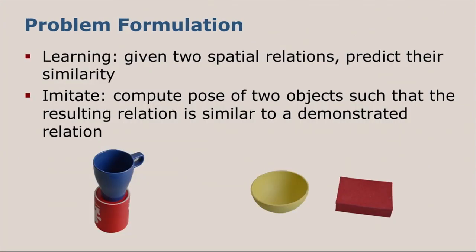We're going to tackle the problem of learning to predict the similarity of relations. For example, when we have these two scenes given here, we want to predict how similar are the relations contained in them. The second thing that we want to be able to do is to imitate relations. If we use the scene on the left as a reference scene, we want to be able to transform the poses of the objects on the right such that they imitate the relation in the left scene.